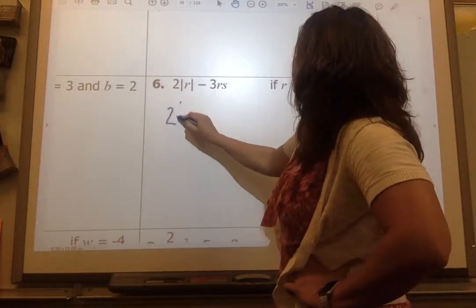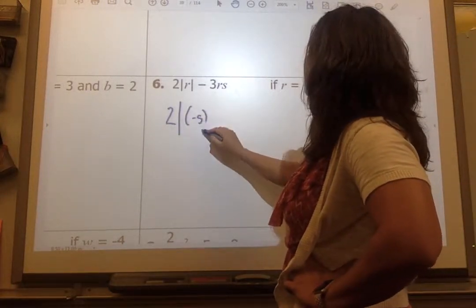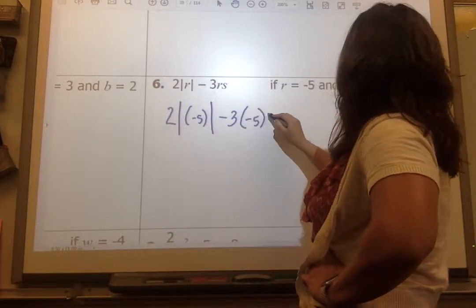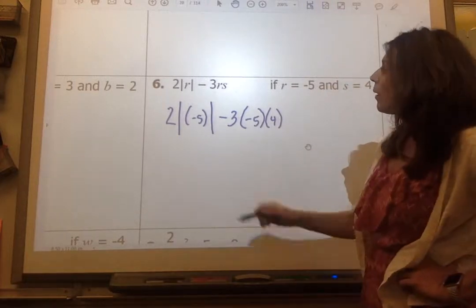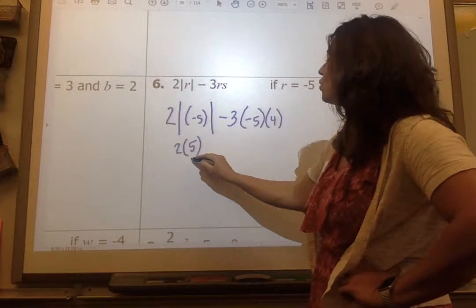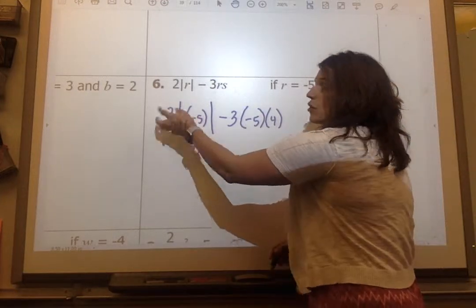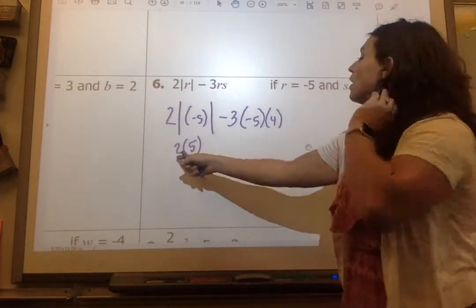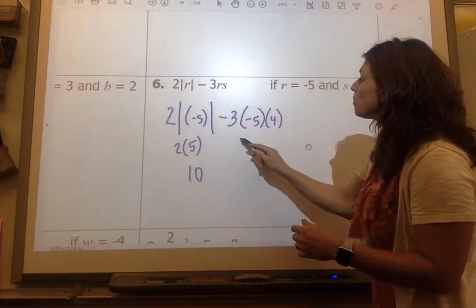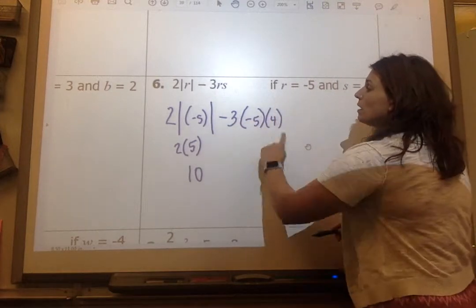Let's do more ones with negatives. So number 6. My setup is 2, open parentheses, negative 5 in the brackets. Minus 3 times negative 5 times 4. All right. The absolute value of negative 5 is 5, but I have this 2 outside, which means multiplication. That's like the coefficient of that absolute. So 2 times 5 is 10.